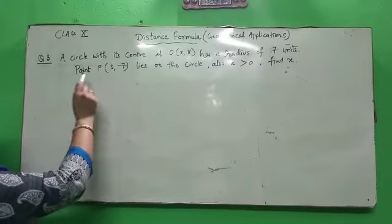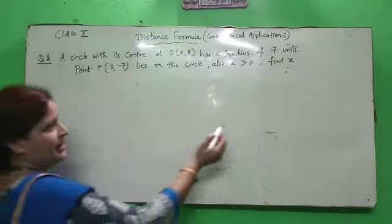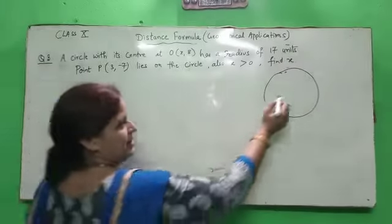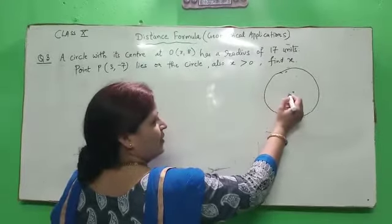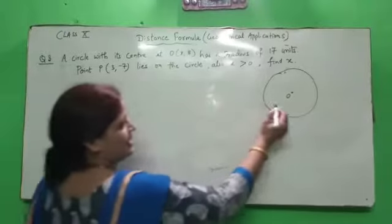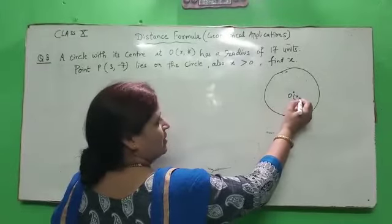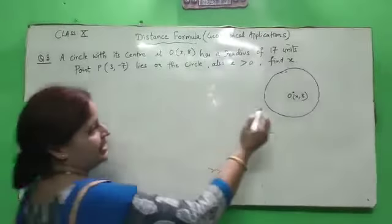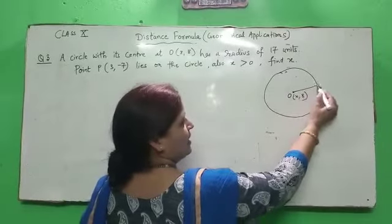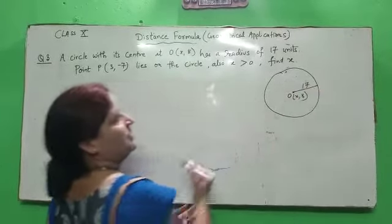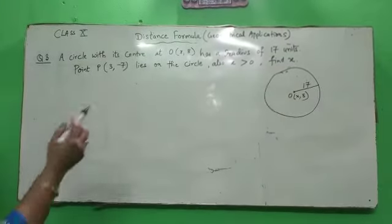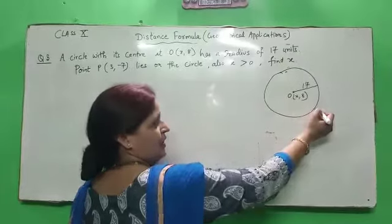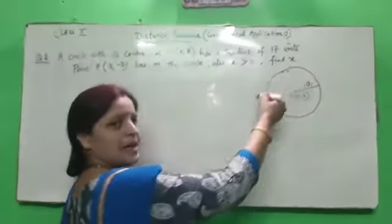What have you given in this question? Let us take a circle, let us draw a circle. Center is O, coordinates are X and 8, and has a radius and its value is 17 units. And point P, suppose point P can be anywhere, lies on the circle, that means on the circle's boundary.